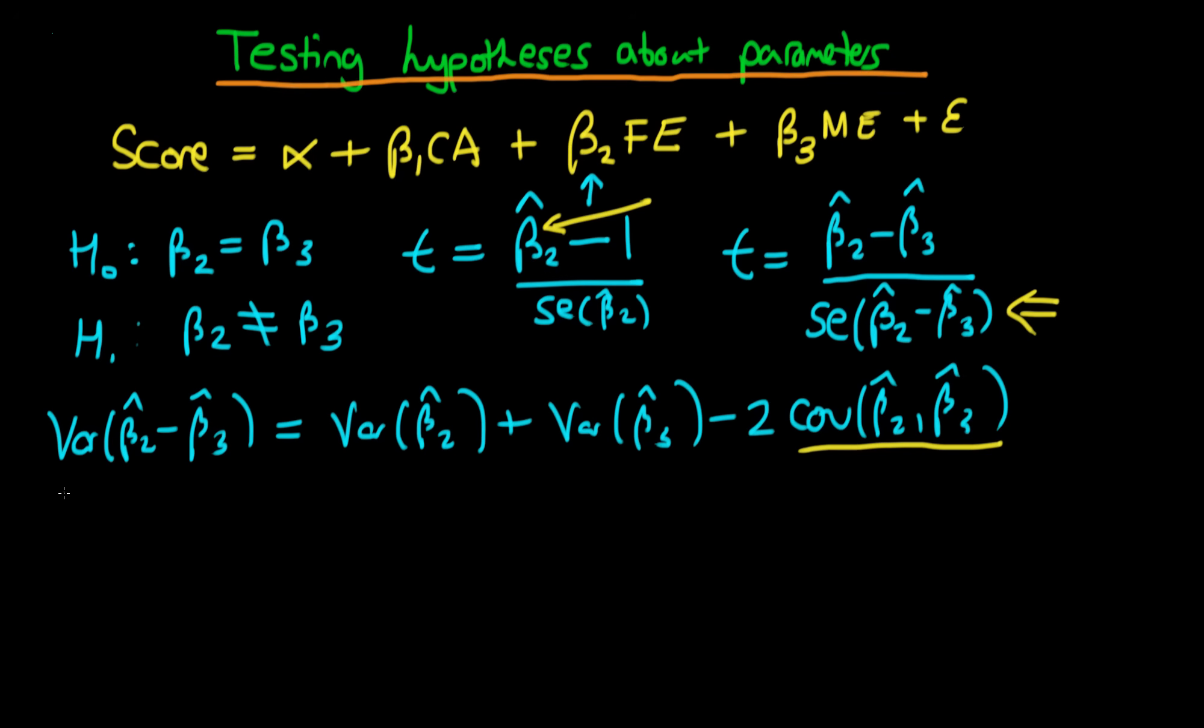The standard error of (β̂₂ - β̂₃) equals the square root of [SE(β̂₂)² + SE(β̂₃)² - 2s₂₃], where s₂₃ is the estimator for the covariance between these two estimators. It's all to the power of one-half because the standard error is our estimator for the standard deviation.